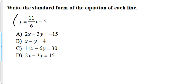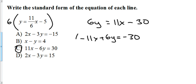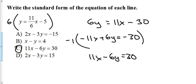For a problem with fractions, multiply everything by 6 to clear them, giving 6y = 11x − 30. Subtract 11x: −11x + 6y = −30. Multiplying the entire equation by −1 gives 11x − 6y = 30. Both forms are acceptable in standard form; the answer choice here happens to be C.